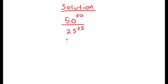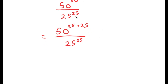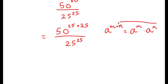I'm going to first rewrite this as 50 to the power of 25 plus 25. So now I have 50 to the power of 25 plus 25 over 25 to the power of 25. The reason I rewrote 50^50 as 50^(25+25) is because I can use an exponential property: a to the power of m plus n equals a^m times a^n. I'd highly recommend memorizing this.